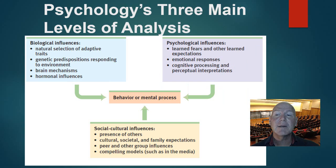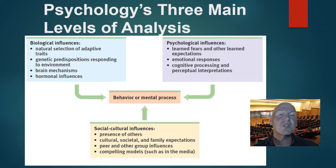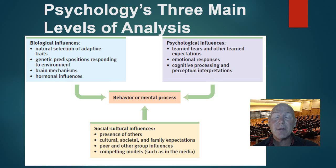Looking at this chart, we can see that for any behavior or mental process there are biological influences, whether it be a psychopathic situation, how we deal with certain family dynamics, any behavior, our emotions, any thoughts we have. There are also psychological influences — emotional responses, cognitive processing, how we think about things. And there are sociocultural influences, which have become a big deal because some findings we have in North America may be different in a different culture. All three main levels of analysis go together.